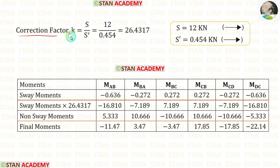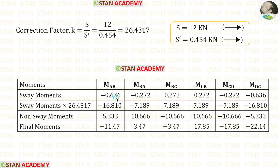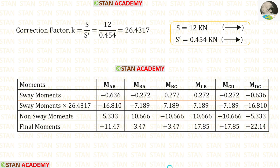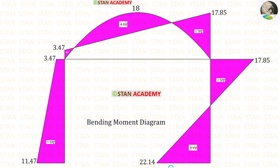Now let us find the correction factor K. The formula is S upon S'. We have calculated S and S'. After calculation for K we are getting 26.4317. Now let us make a table. In the table, first let us enter the sway moments, then multiply the sway moments with the correction factor. When we do that we will get these values. Then let us enter the non-sway moments. To get the real final moments we have to add these two values. After adding we are getting the real final moments. Here you can see the bending moment diagram. Now we are going to end this session. Thank you for watching this video.